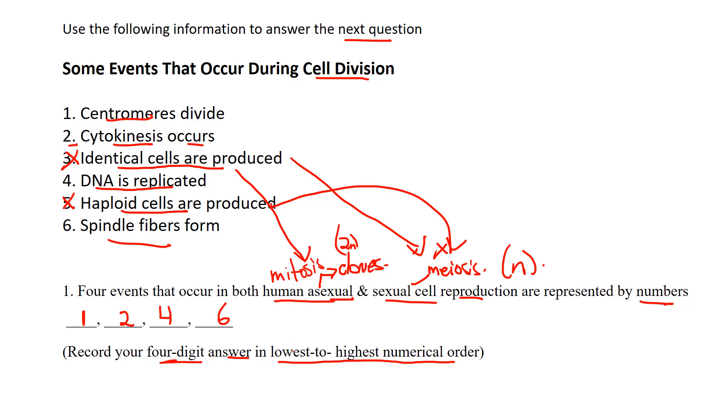So the number that you would actually transfer onto your bubble sheet would be one two four six. That's from lowest to highest ascending order, okay? Any questions on that, give me an email and we'll go over it. Thanks guys.